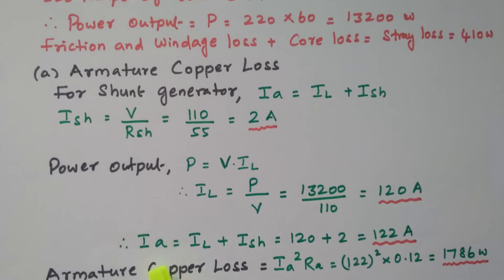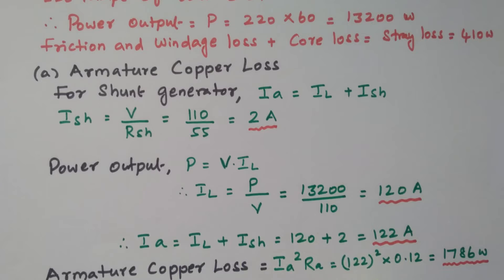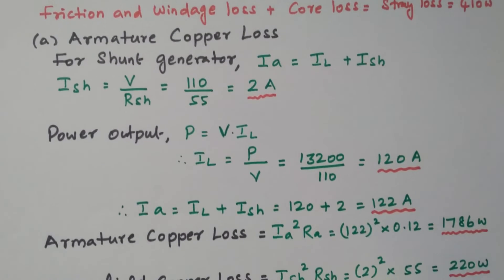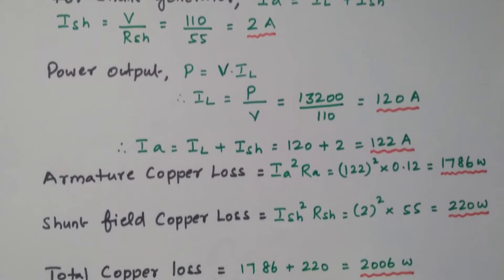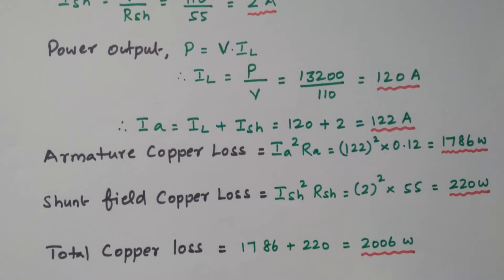From that we can calculate the armature current: Ia = IL + Ish = 120 + 2 = 122 amperes. The armature current is 122 amperes.